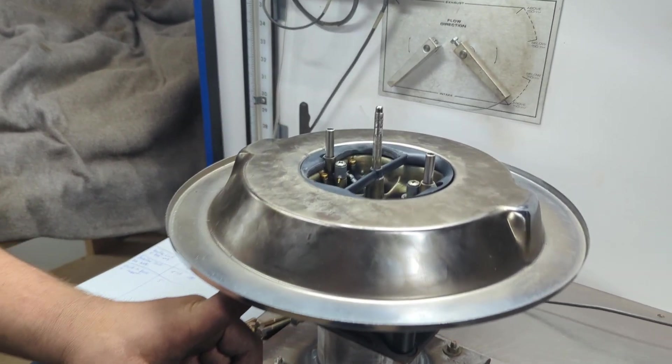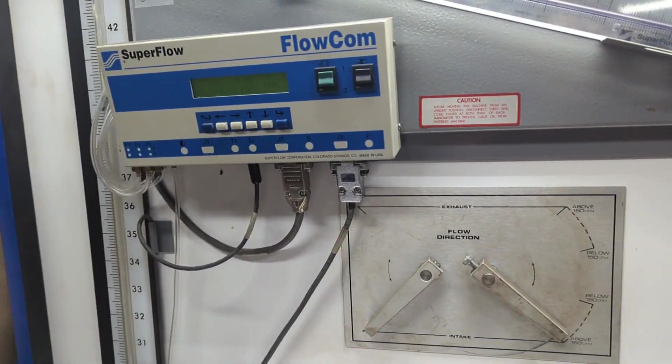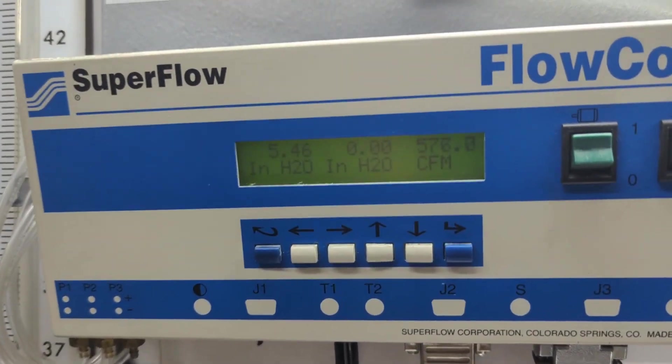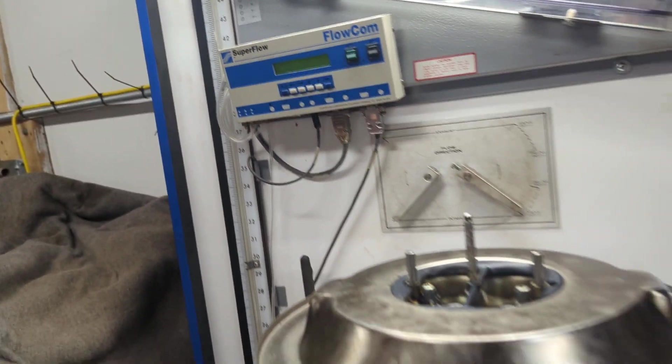When I first put the modified stub stack on, I could hear that there was definitely a problem. The flow bench bogged way down. It recovered, but it actually flowed less than without.